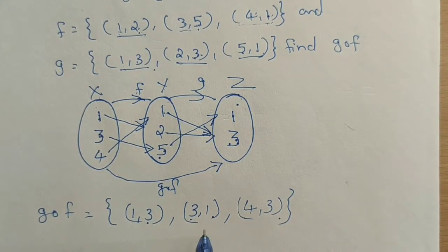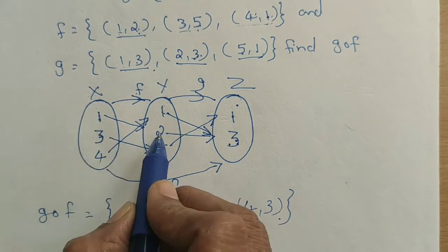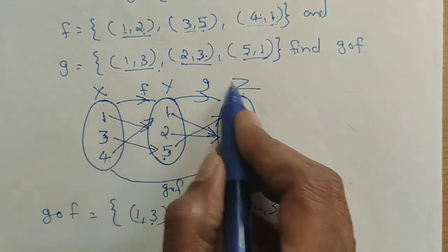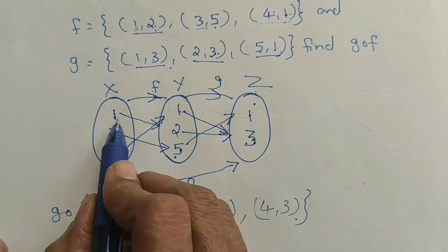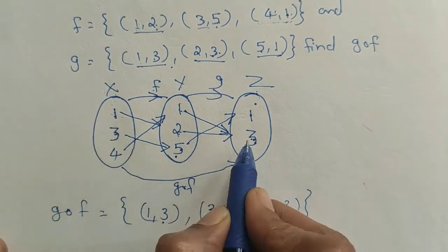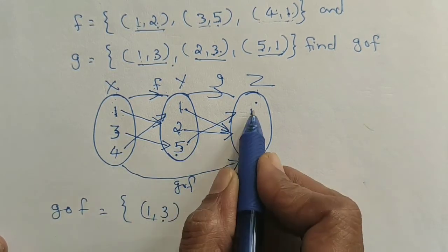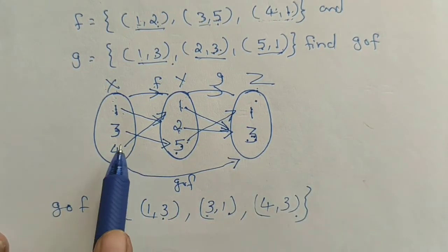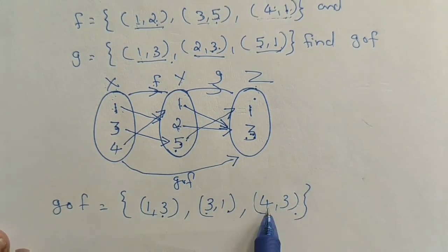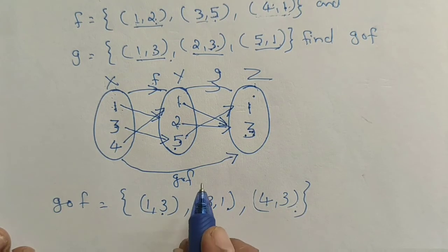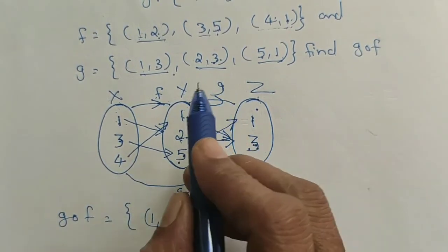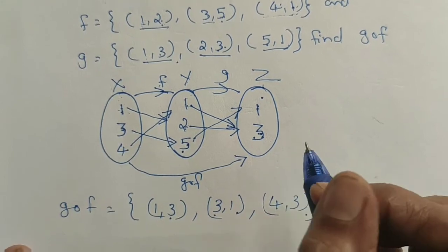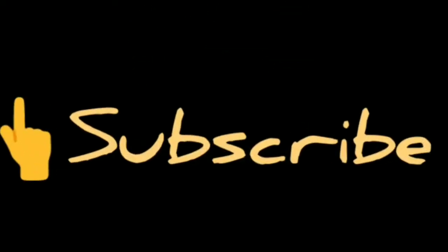This is the g composition of f. We have: 1 maps to 3, 3 maps to 1, and 4 maps to 3. This is the complete G Composition of F. After this, we will see the next problem in the session.